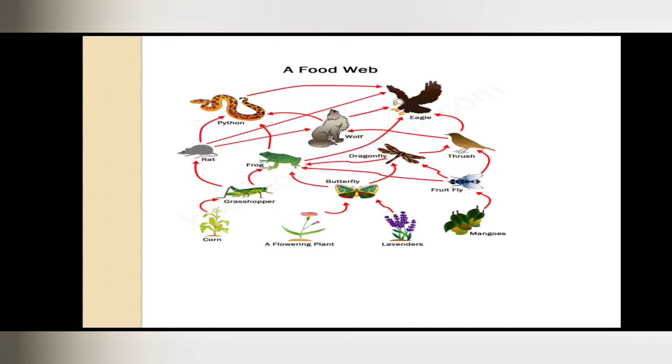There can be many examples. See this one - starting from corn. Corn is eaten by grasshopper. Grasshopper is eaten by rat. Rat is eaten by python. And python is eaten by eagle. In this way, you create an interdependence, a web of life.